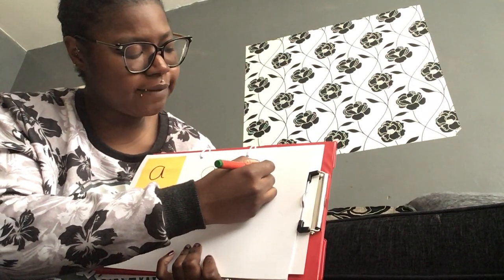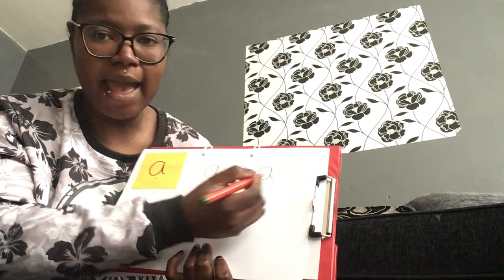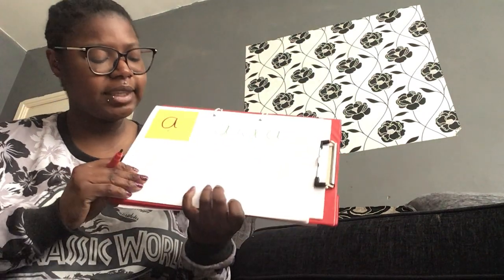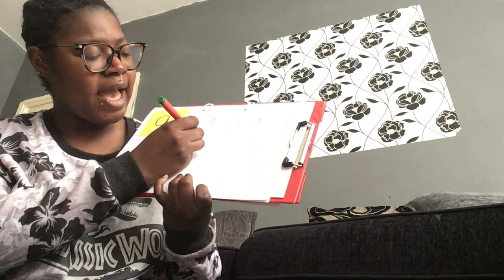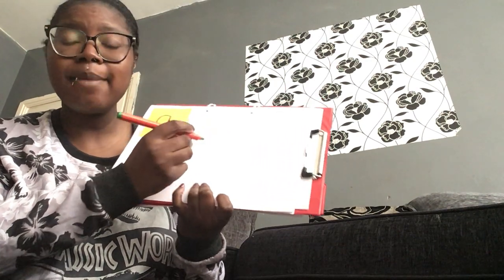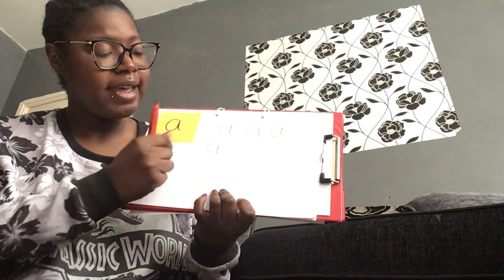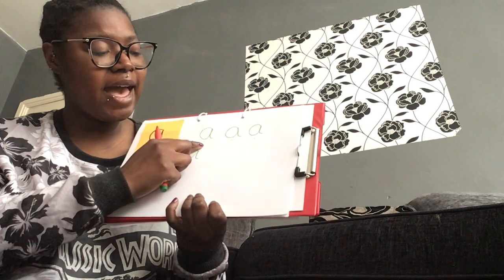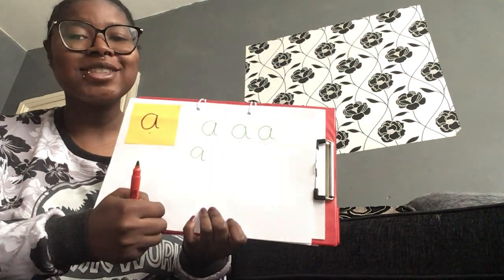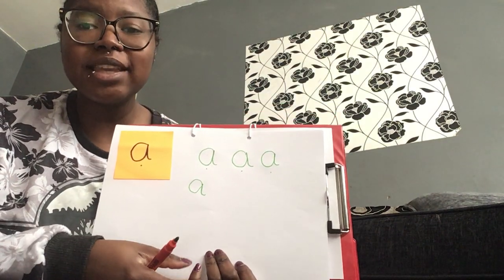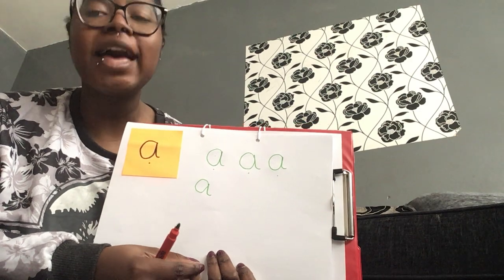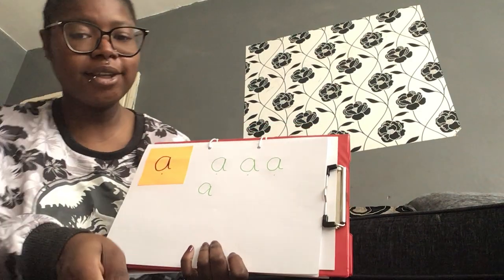Do you remember the Jolly Phonics song for ah? Shall we have a sing of it? Let's see. Ah, ah. Ants on my arm. Ah, ah. Ants on my arm. Ah, ah. Ants on my arm. They're causing me alarm. Ah. Beautiful.